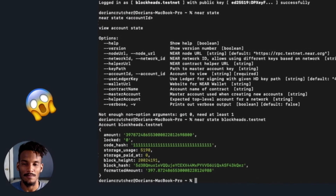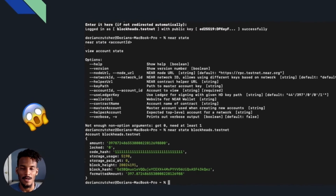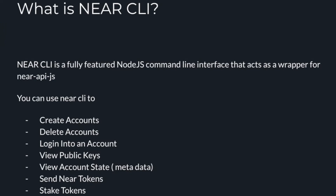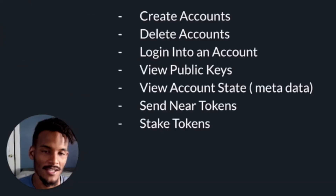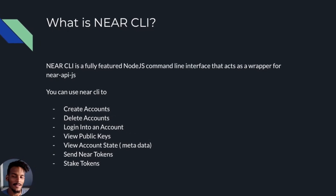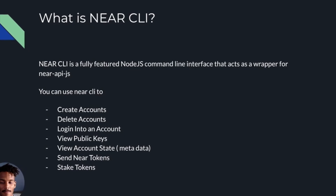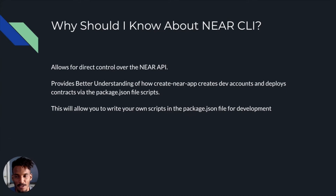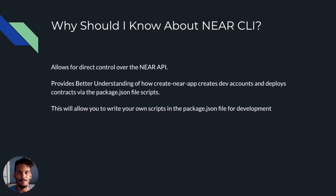Now let's enter into the world of Near CLI. Terminal commands can seem scary but they give you a lot of control over the Near API. The Near CLI is a fully featured Node.js command-line interface that acts as a wrapper for the near-api-js library. It gives you full direct control of the near-api-js wrapped up into terminal commands. With it, you can create and delete accounts, log into accounts, view public keys, view account state, send and stake tokens, and much more. It allows direct control over the Near API, provides a better understanding of how Create Near App works, lets you create dev accounts and deploy contracts, and lets you write your own scripts in package.json or bash.